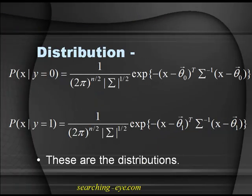The distributions for p(x|y=0) and p(x|y=1) are as follows: x with y equal to 0 belongs to a normal distribution with mean vector theta-naught and covariance matrix Sigma, and x with y equal to 1 belongs to a normal distribution with mean vector theta-1 and covariance matrix Sigma. Both share the same covariance matrix Sigma but have different mean vectors. The density for p(x|y=0) is 1 over (2pi)^(n/2) |Sigma|^(1/2) times exp(negative (x minus theta-naught) transpose Sigma inverse (x minus theta-naught)), and similarly for p(x|y=1) with theta-1.